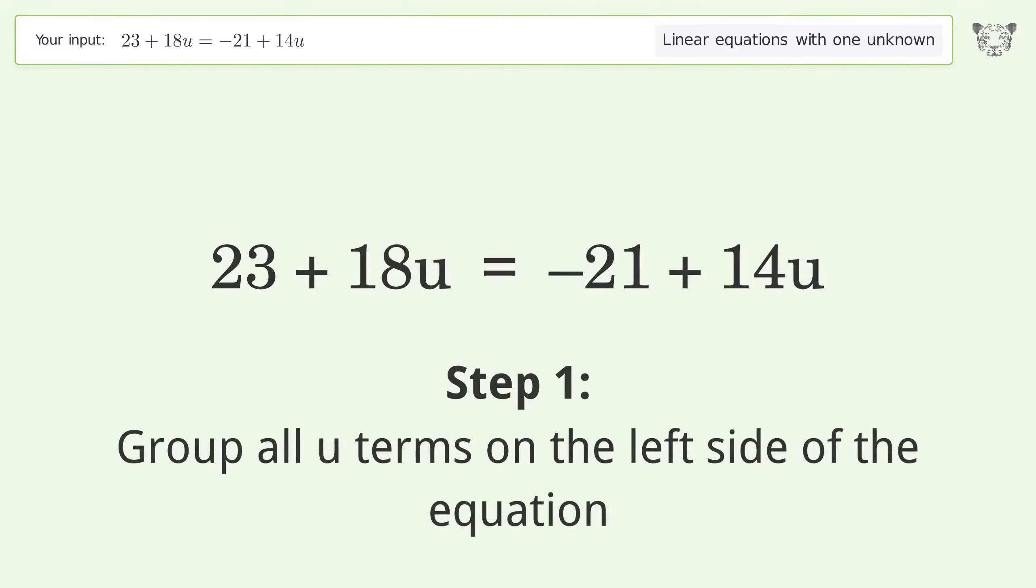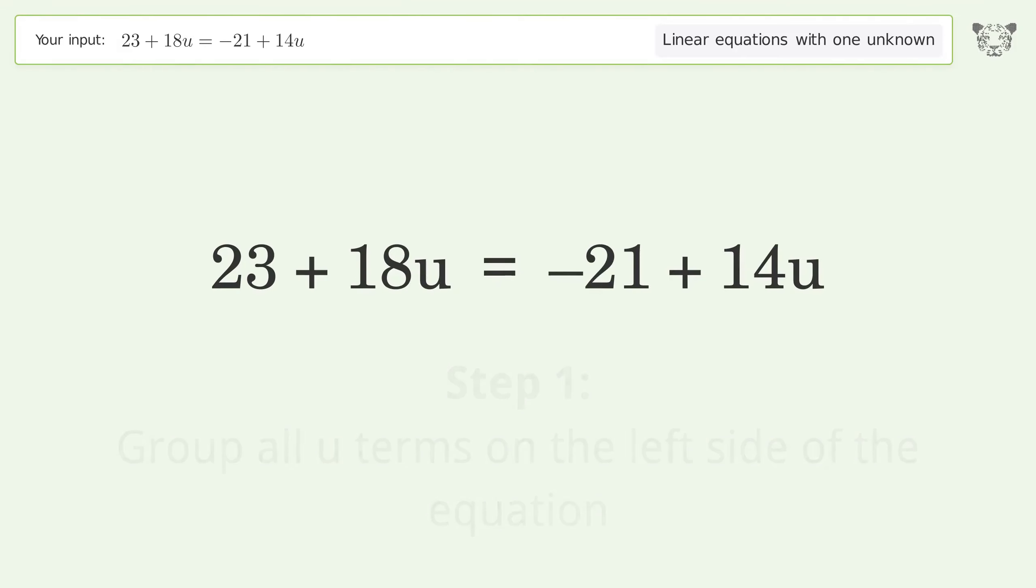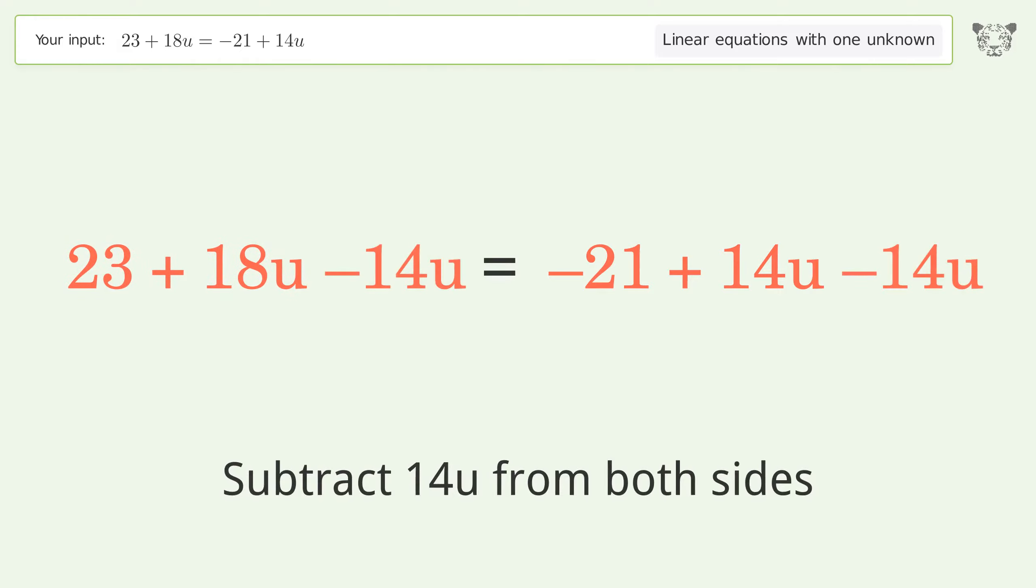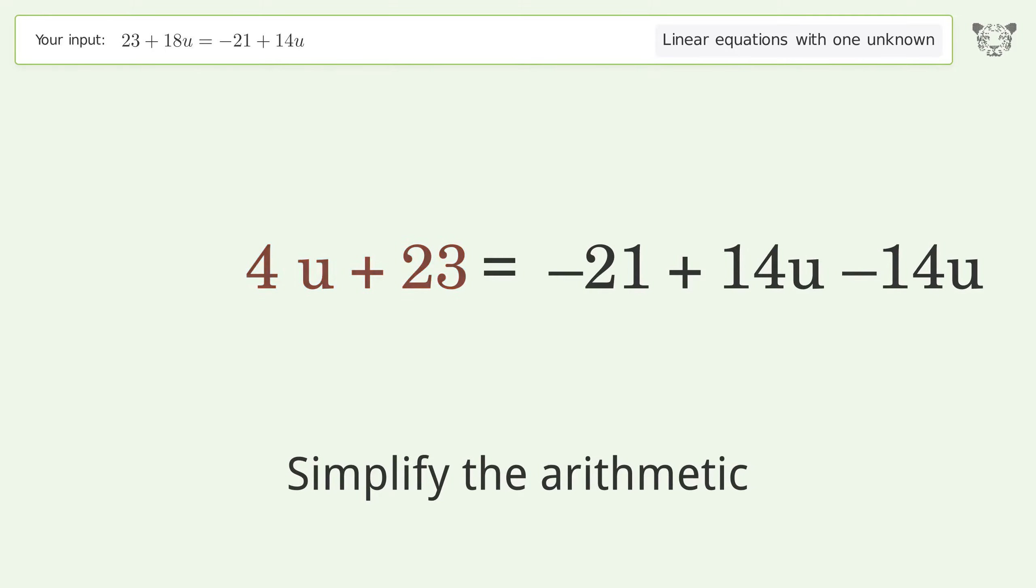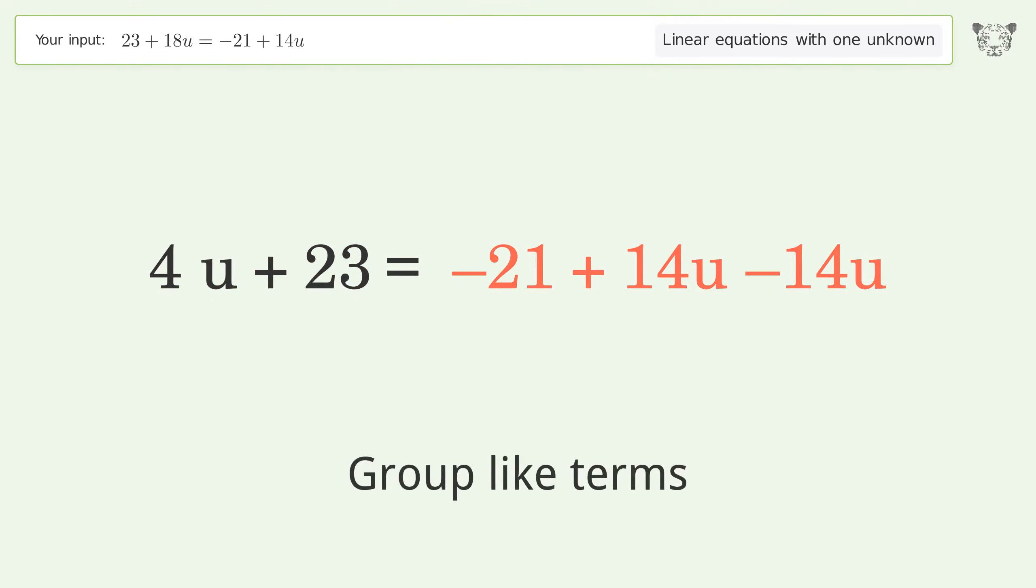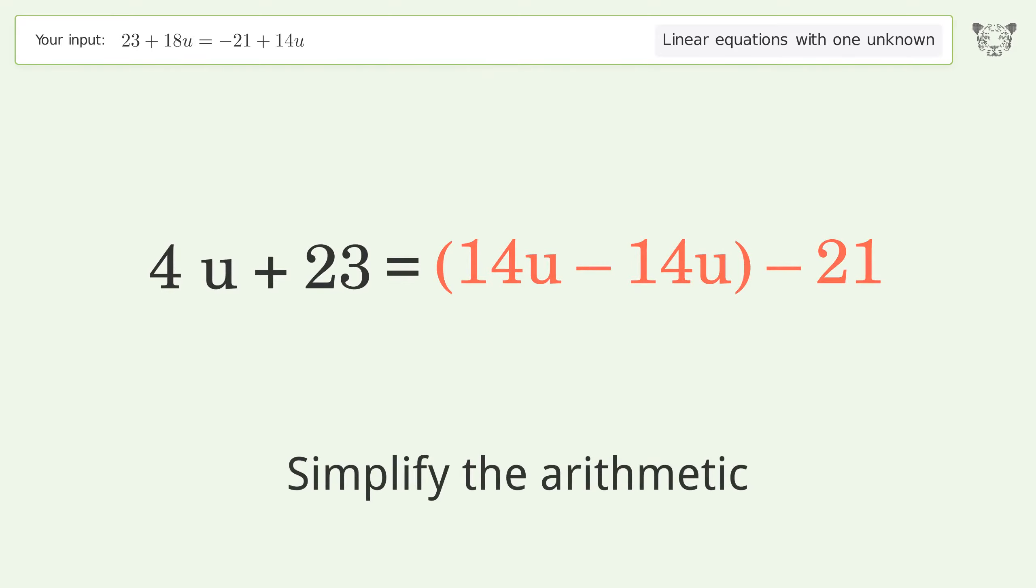Group all u terms on the left side of the equation. Subtract 14u from both sides. Group like terms. Simplify the arithmetic. Group like terms. Simplify the arithmetic.